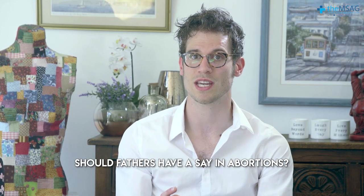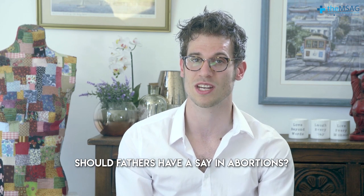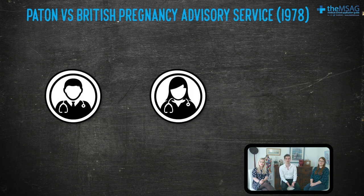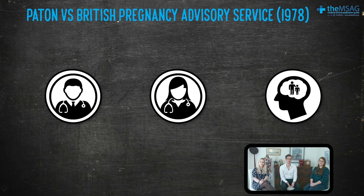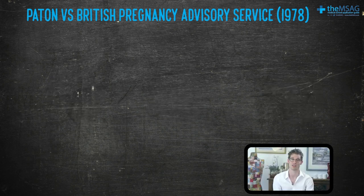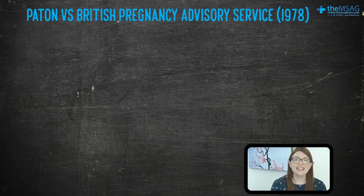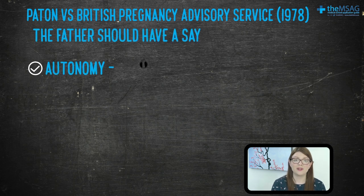Considering justice and treating equals as equals, do you think that the father should have a say in whether the pregnancy can be aborted? In the real case of Patton versus the British Pregnancy Advisory Service in 1978, a wife was pregnant with her husband's child and wanted to have an abortion. The procedure had been agreed by two medical doctors as required, but her husband didn't want it to happen. He applied to the court for an injunction restraining her from having an abortion without his consent. Does he have a case? The baby is genetically half his, therefore surely he should have some autonomy over what happens.